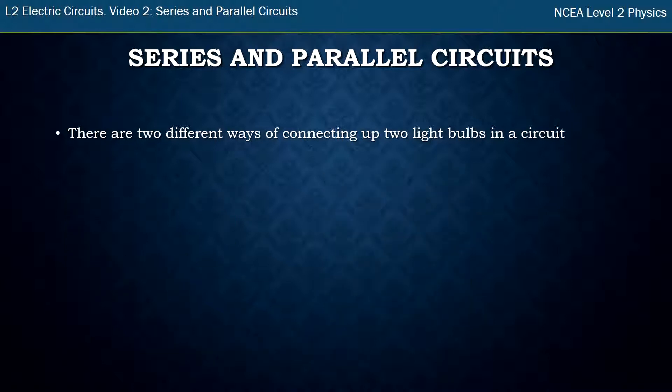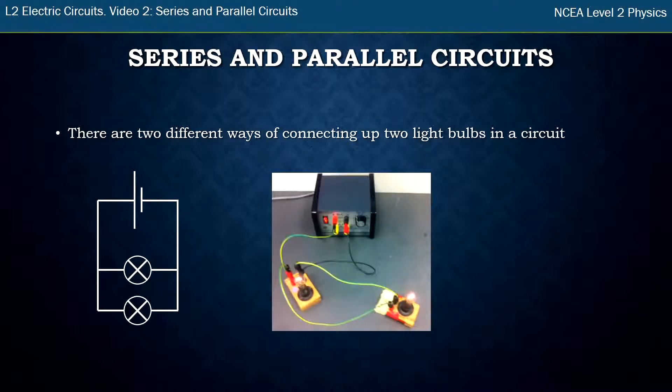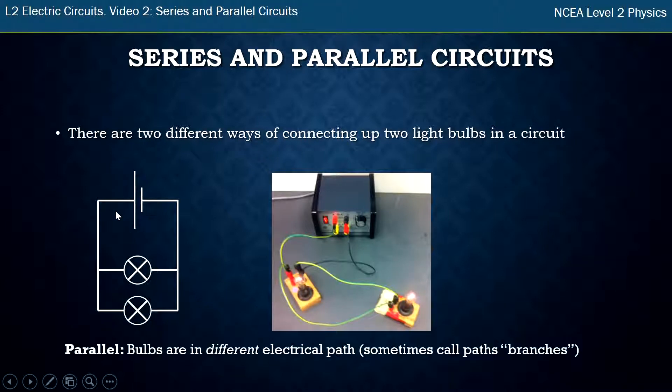The other way of connecting up two bulbs in a circuit is called a parallel circuit. So this is the circuit symbols of what it looks like and this is how you'd put it together. You can see at this point here the plugs are plugged into each other and what that does is it creates a junction and it means there's another path for electricity to flow. This is called a parallel circuit so this is where bulbs are in a different electrical path.